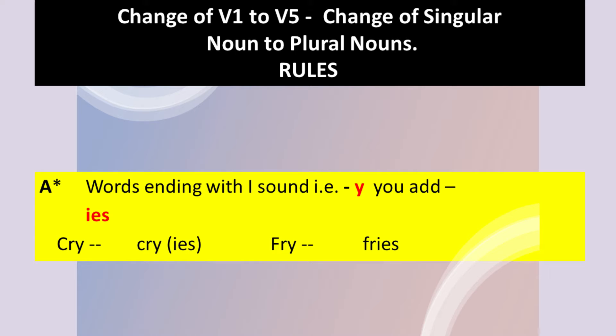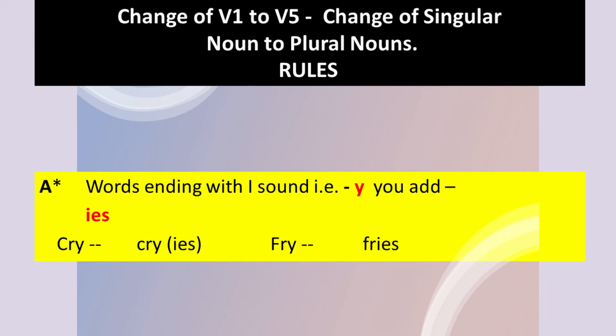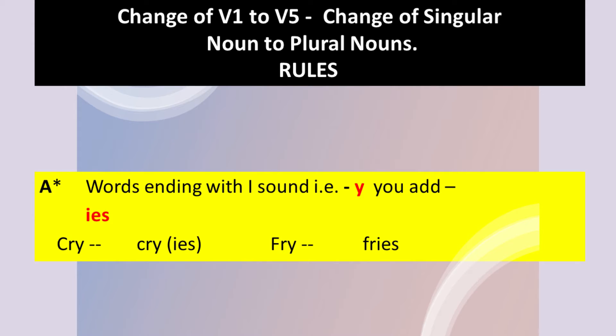Toh Y jo change ho gaya aapka, woh 'I' mein. Cry is a word. They cry for small things. Ab mein ne usko change karna hai according to subject — toh Y changes into I. So 'she cries for petty things' — chhoti chhoti cheezoh ke liye woh roti hai. She is a singular subject aur us ke saath humne verb form lagaya V5. Toh jo word ending with Y hai, will take the sound of I, agar us se pehle consonant hoga. This is rule number one.